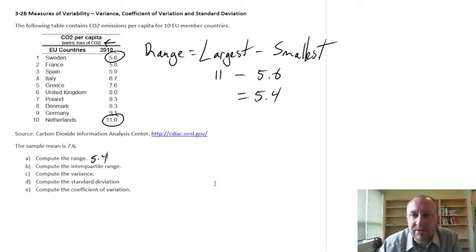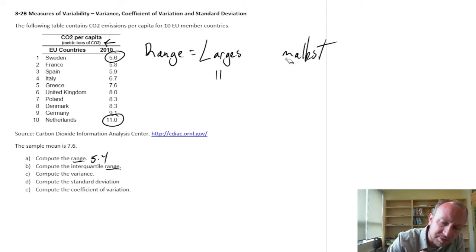Part B, compute the interquartile range. It's a very similar measure, but now the interquartile range is basically giving us the range of the middle 50%. We're going to ignore the smallest 25%, ignore the largest 25%, and just look at the range of the middle 50%.